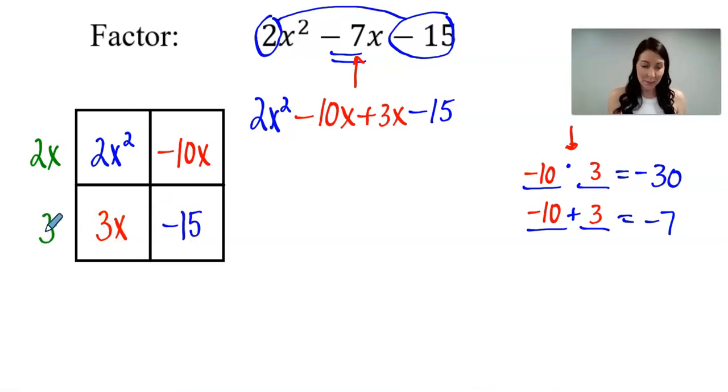Now let's look at the first column. The greatest common factor between 2x squared and 3x is simply x. And then the greatest common factor between negative 10x and negative 15. Because that first term is negative, I'm going to factor out a negative GCF. So that's going to be a negative 5.